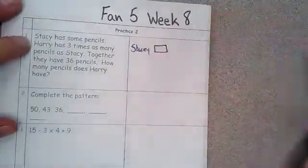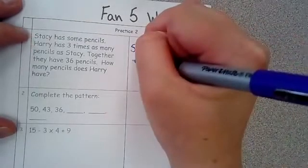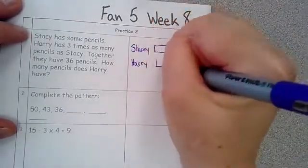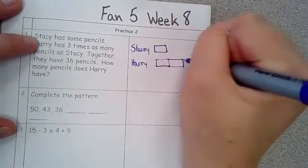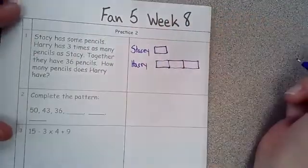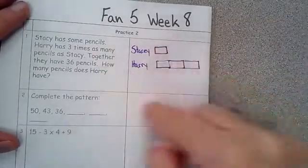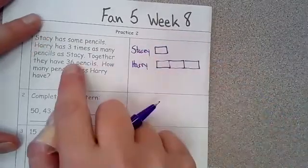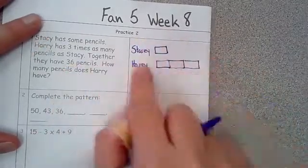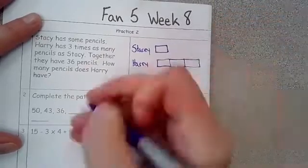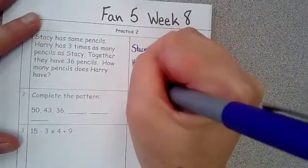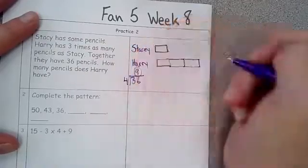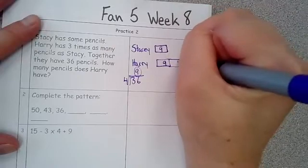Okay, then Harry has three times as many pencils as Stacy. So write Harry and give Harry three times as many as Stacy. Alright, together they have 36 pencils. So you've got to take 36 pencils and divide it between one, two, three, four boxes. So 36 divided by four is nine. So put nine pencils in each box.